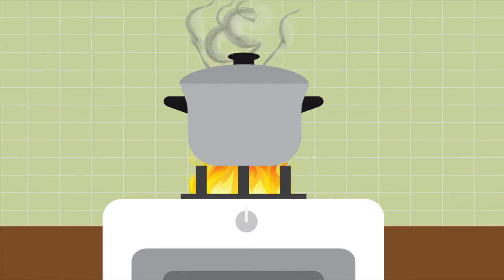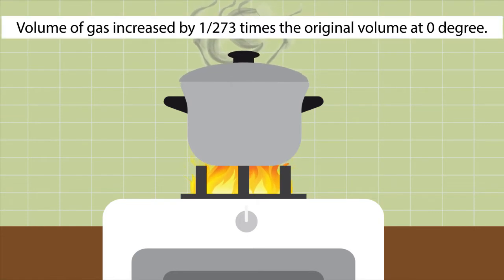Charles found experimentally that for a fixed mass of gas at constant pressure, the volume expands or contracts as the temperature varies. To be precise, the volume of a gas increased by 1 by 273 times of the original volume at 0 degree Celsius or at 273 degree Kelvin.